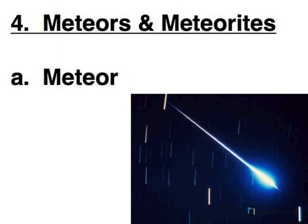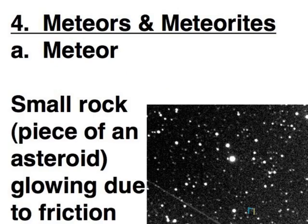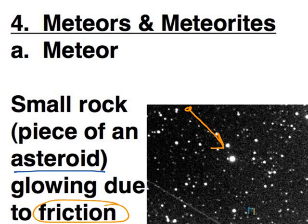Meteors and meteorites. A meteor is also commonly known as a shooting star, but it is not really a star. What you're actually seeing is a little piece of rock — typically from an asteroid — plummeting through our atmosphere. As it comes through the atmosphere, there is friction, and that friction heats up that rock. The rock then heats up the air around it. So this streak of light is not actually that rock, but instead the reaction of the air around it to the heat — it's actually ionizing the air.